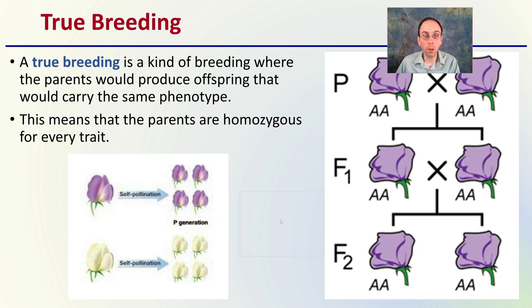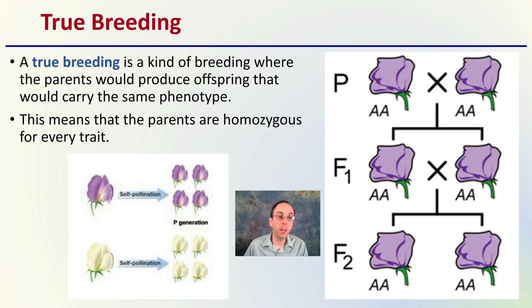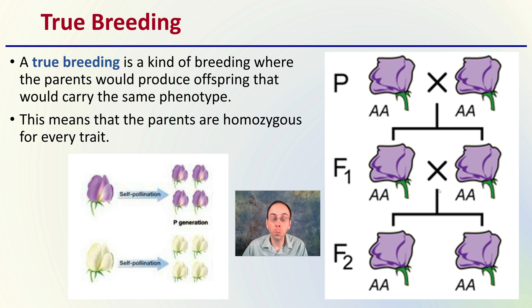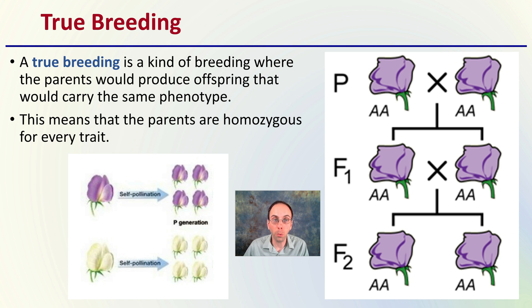True breeding is a kind of breeding where the parents produce offspring that carry the same phenotype — phenotype being how the organism looks. This means that the parents are homozygous for every trait. In this example we're breeding purple with purple getting purple, so on and so forth — they come true from type. We see the same thing with the white flowers, where self-pollination produces more and more of the same. These would be examples of true breeding lines.